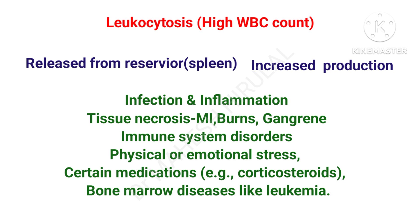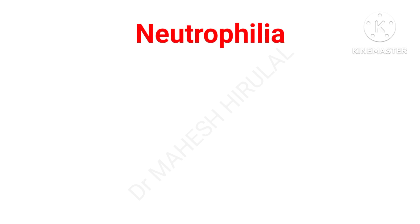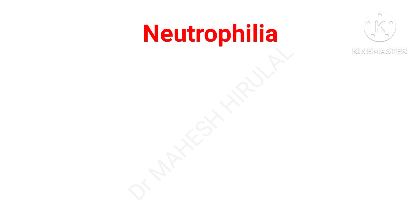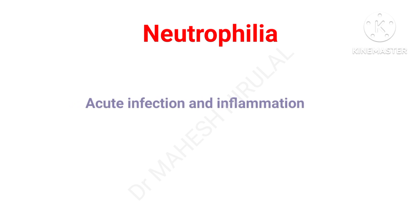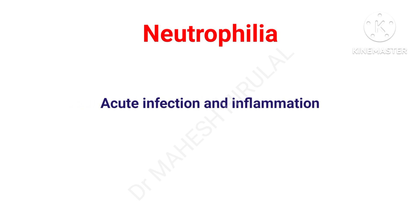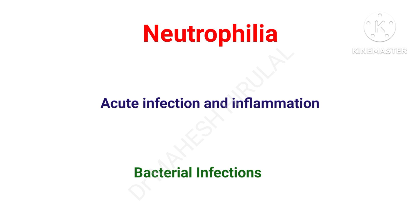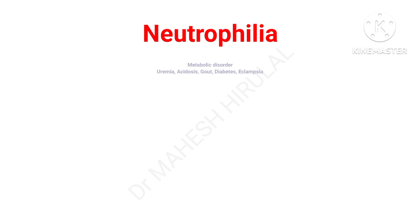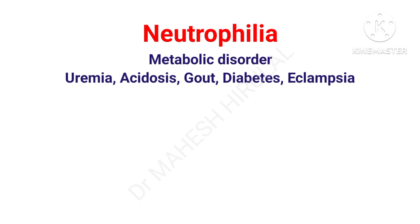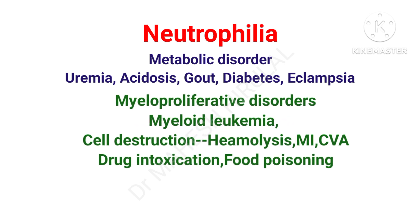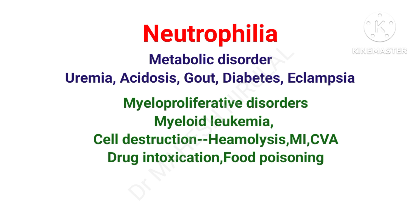The increased WBC count has to be interpreted with differential count. Increase in neutrophil count is called neutrophilia, indicating acute infection and inflammatory conditions. Increased neutrophils are most commonly seen in bacterial infections — both pyogenic and non-pyogenic. Metabolic disorders like uremia, acidosis, gout, diabetes, and eclampsia may lead to high neutrophils. Myeloproliferative disorders like myeloid leukemia will also lead to neutrophilia.